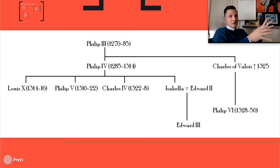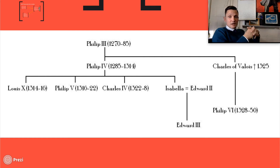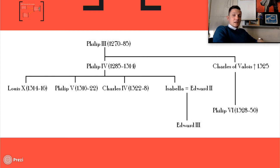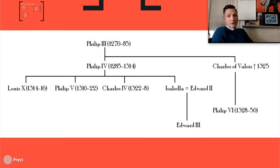Let's talk about the royal family in France — a French royal family tree. You've got Philip III up here, King of France, and then his son Philip IV. Coming down, Louis X is going to be in charge but he's going to die, then Philip V is going to die, and then Charles IV is actually going to be in power. Charles IV was a very, very prominent leader of France.